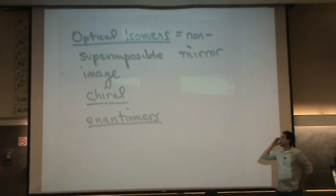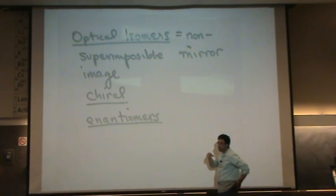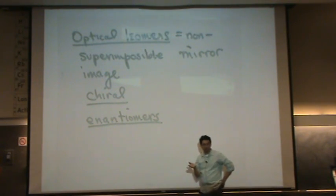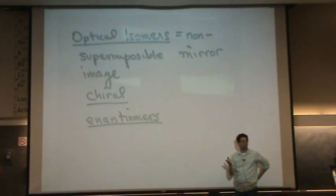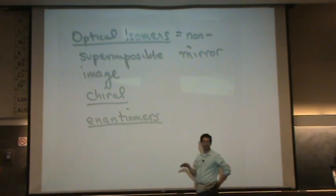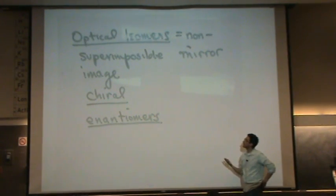Why these terms are helpful. Chiral molecules or optical isomers, one characteristic of them is they rotate light. So right-handed molecules will rotate polarized light in one direction. Left-handed molecules will rotate light in another direction. So this is one common characteristic of them.